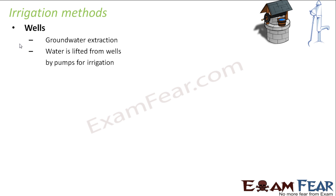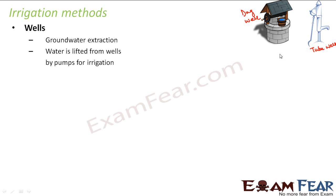First, irrigation by wells. There are two types of wells: the dug well, and the tube well. As you can see in the picture, this is a dug well. A tube well has a hand pump to pump the water out. Both types of wells extract underground water — the well goes deep inside the ground, and similarly the tube well also goes deep underground. These wells help in the extraction of groundwater.